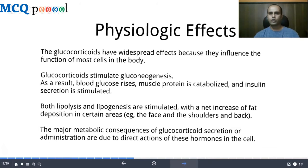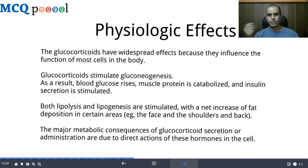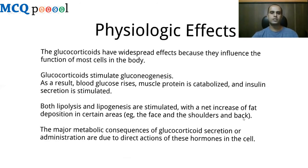Glucocorticoids have widespread effects because they influence the function of most cells of the body. They stimulate gluconeogenesis, raising blood glucose levels; muscle protein is catabolized and insulin secretion is stimulated. Both lipolysis and lipogenesis are stimulated, with a net increase of fat in certain areas. Fat deposition on the face leads to the characteristic moon face seen in Cushing's syndrome or glucocorticoid overdose, and fat deposition in the shoulders and back leads to the buffalo hump, also characteristic of Cushing's syndrome.